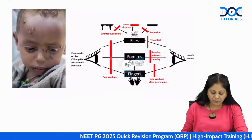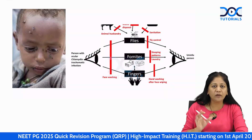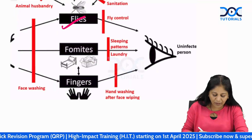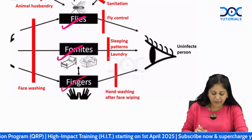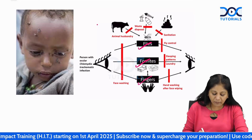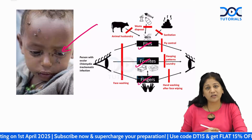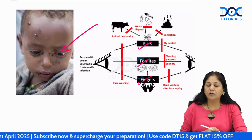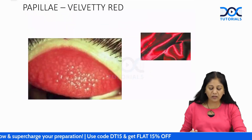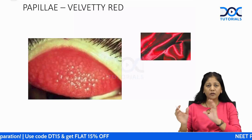In the earlier stage, people staying in filthy environments — the 3Fs: flies, fomites, and fingers — transmit Chlamydia trachomatis to the eye of a small child. In the eye of a small child, we see active inflammation caused by Chlamydia trachomatis.